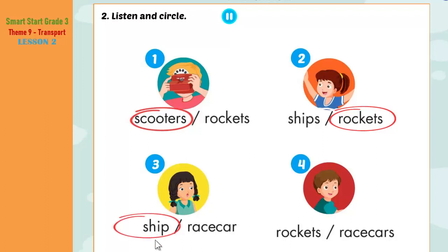Four. And you, Tom? What can you see? I can see five yellow race cars. Alfie? I can see one red spaceship. Let's go for a ride! Hooray!